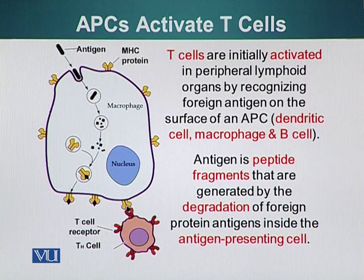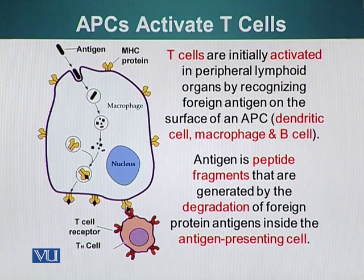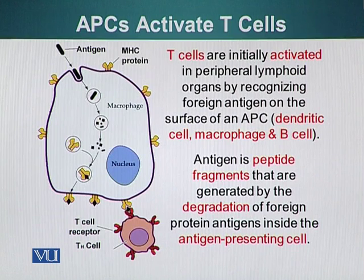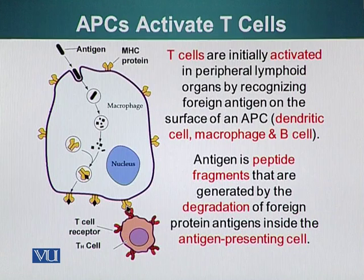The APCs present antigen fragments — peptide fragments — that are generated by degradation of foreign protein inside the cell. These are presented to T-cells with the help of MHC proteins. Here in this diagram, you can see a macrophage acting as an APC.